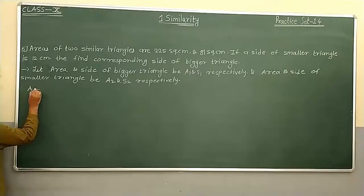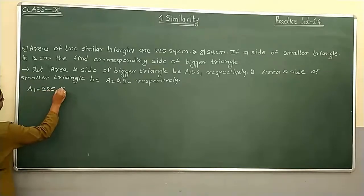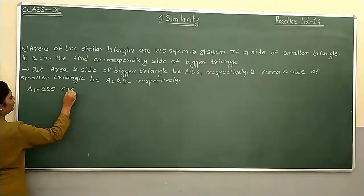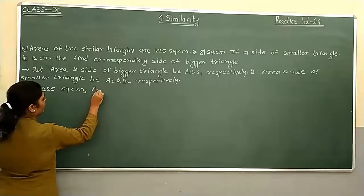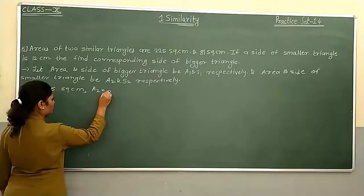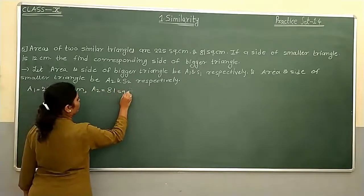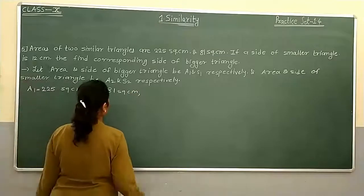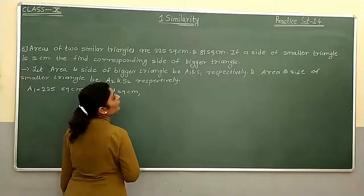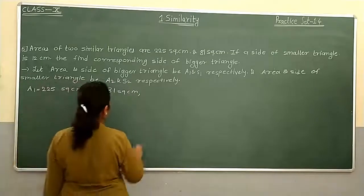So A1, area of bigger triangle, A1 is 225 square cm. A2 is 81 square cm. S1 is the side of the smaller triangle — wait, S2 is the side of the smaller triangle, which is 12 cm.